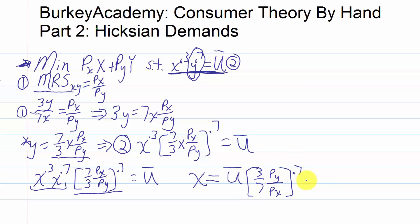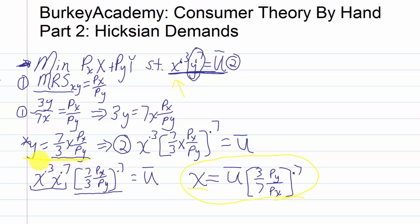To solve for y, we can plug this x term into the utility function, or we could plug it into the other equation — the marginal rate of substitution equals price of x over price of y. Another option is to plug this x — which is u-bar times (3/7 · py/px) to the 0.7 — into our simplified MRS equals price of x over price of y equation. In this case, that's probably the easiest approach.